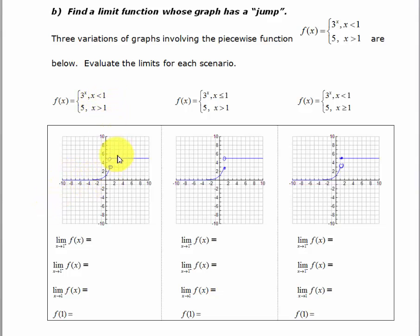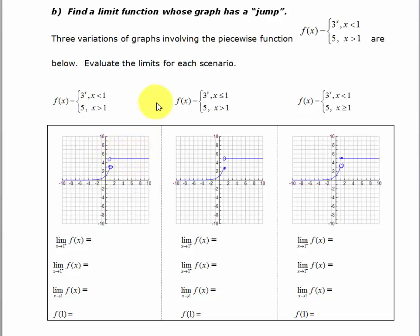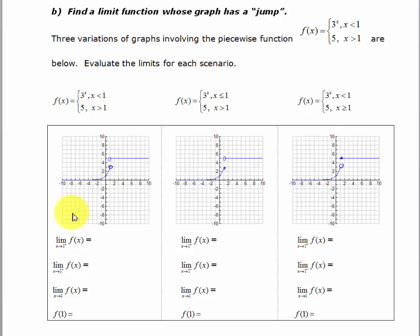It's 3 to the x if x is less than 1 — that is an exponential function. And it's f(x) = 5 if x is greater than 1. So for less than 1 we have an exponential function; greater than 1 we have a constant function. Notice the open circles because there is no equal sign in either of these. Pause the video and fill out what you think — I would use pencil in case you make a mistake — then evaluate these limits and turn the video back on.